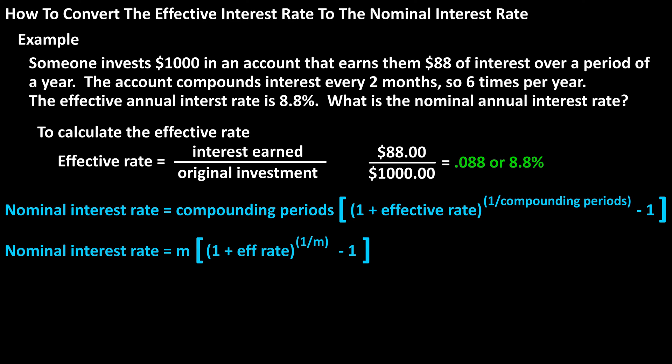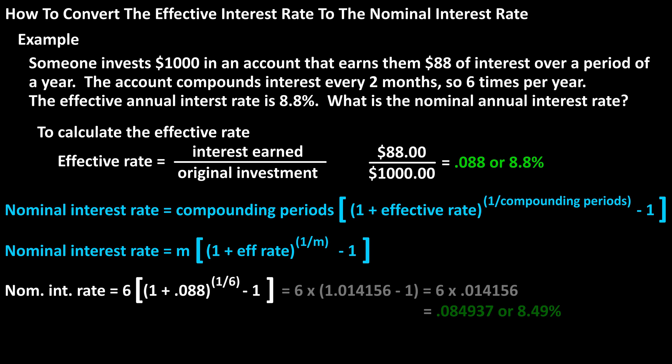Here is a short version of the formula. Plugging into the formula, we have: nominal rate equals 6, the number of compounding periods, times the quantity (1 plus 0.088) — the decimal value of 8.8% — raised to the 1 over 6, minus 1. After the calculations, we get the nominal rate equals 0.084937, or 8.49% rounded off.